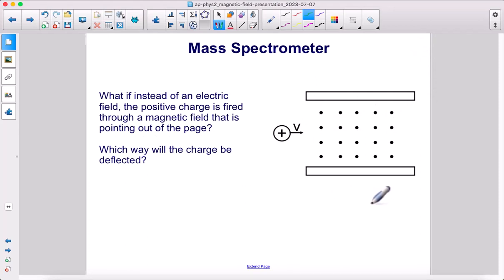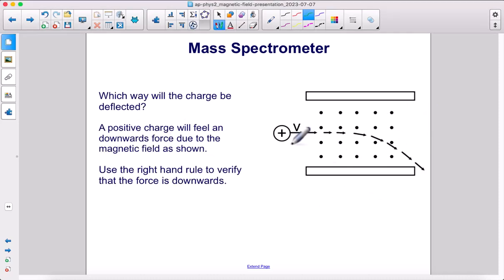What if, instead of an electric field, the positive charge is fired through a magnetic field that is pointing out of the page? Which way will the charge be deflected? Use the right-hand rule, and it will show you that this charge will feel a downwards force this way.